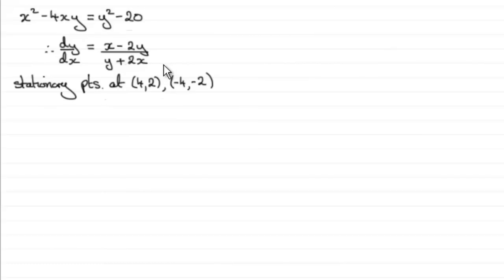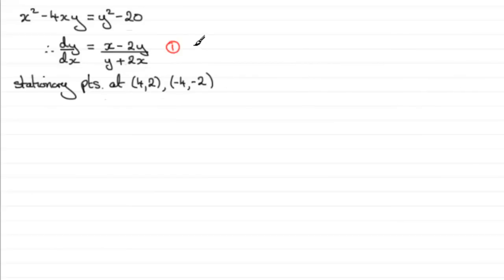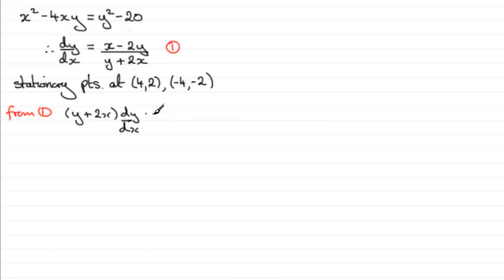We could use the quotient rule, but that is generally quite cumbersome for something like this. Instead, I want to get rid of the fraction by multiplying both sides by (y + 2x). Calling the dy/dx expression equation (1), if we rearrange it we get: (y + 2x) · dy/dx = x − 2y.